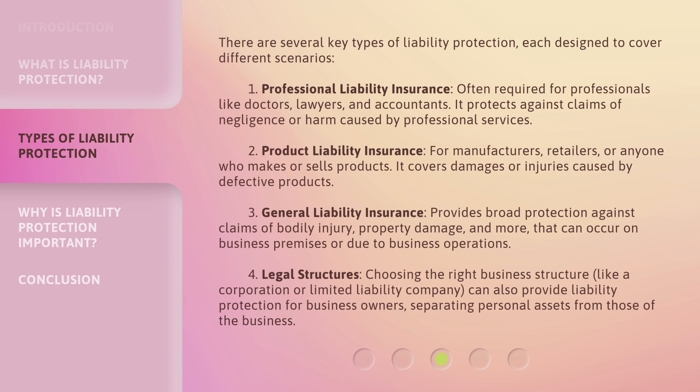Third, general liability insurance provides broad protection against claims of bodily injury, property damage, and more that can occur on business premises or due to business operations. Fourth, legal structures — choosing the right business structure, like a corporation or limited liability company, can also provide liability protection for business owners, separating personal assets from those of the business.